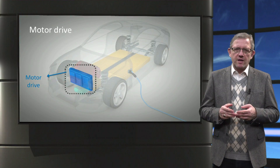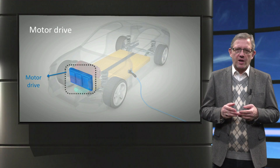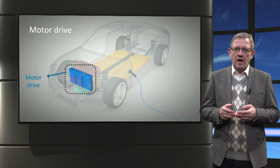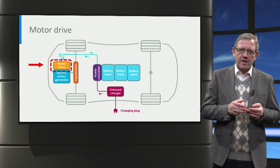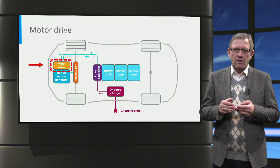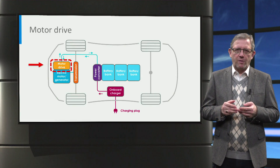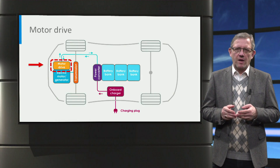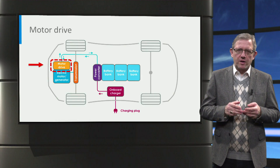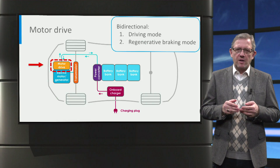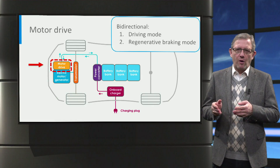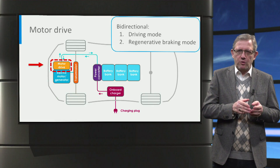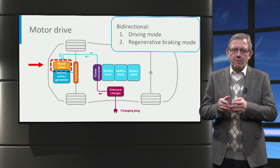The next component is the motor drive. The motor drive controls the speed, torque and rotational direction of the motor. Depending on the motor, the motor drive is a DC-to-AC inverter or a DC-to-DC converter that is used to control the power flow between the battery and the motor. Unlike the power converters we have seen earlier, the motor drive is a bi-directional converter capable of delivering power to the motor for propulsion but also removing it from the motor for regenerative braking.